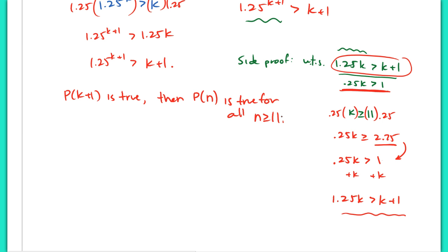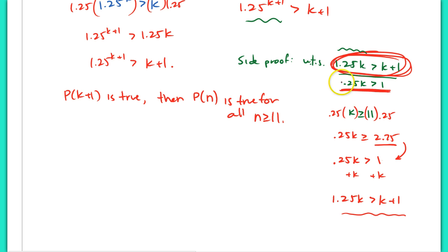Now I hope that after seeing a second inequality proof, you're going to see kind of a pattern here — but they are all tricky and all very different from one another. There's no set way necessarily to solve each one. There are some tricks you can use throughout, but it's going to be basically your creativity and your ability to see certain things and know where you're supposed to go. Here, I knew I wanted to end up showing 1.25k > k+1, and all I really needed to show was that 0.25k > 1, by looking at what they have in common and what they don't. That's why I multiplied by 0.25 on both sides, then replaced the right-hand side with something even smaller.